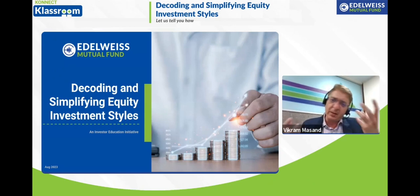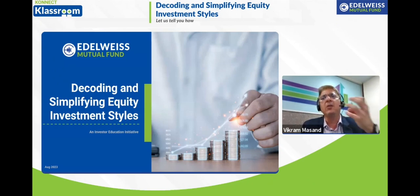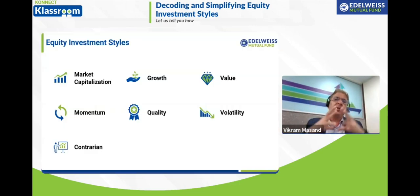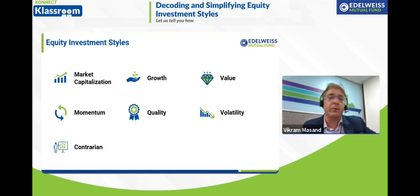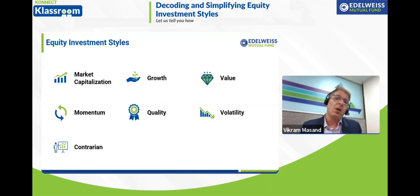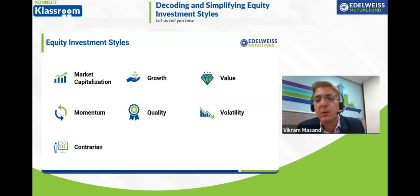You may not need to choose just one single style — it could be a combination, or you could even switch between styles depending on how you're reading the current market situation. There are predominantly seven styles I'm going to talk about: market capitalization, growth, value, momentum, quality, volatility, and contrarian investing.